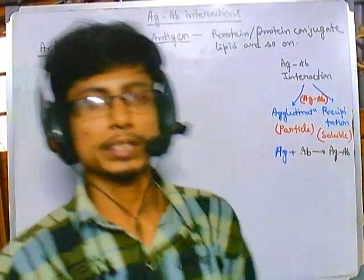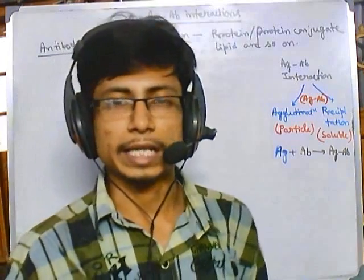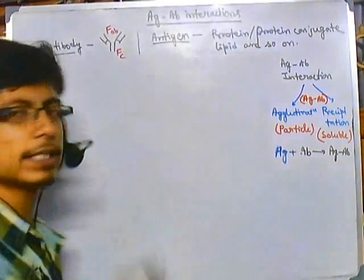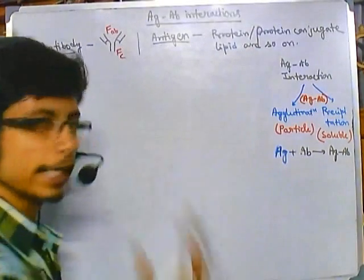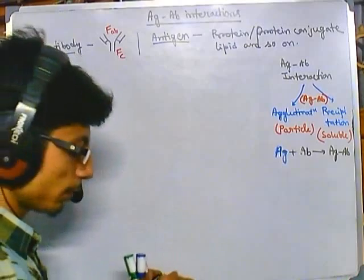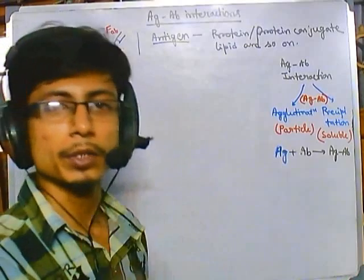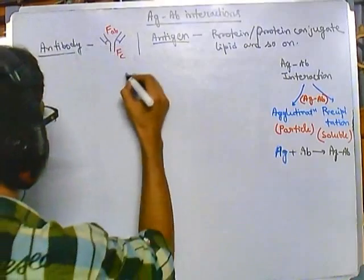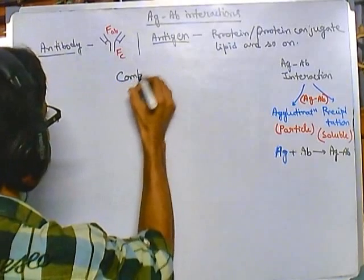Welcome back. We are talking about different antigen-antibody interactions, and this video will be about a very interesting technique to find out the antigen-antibody complexes that are present in our sample. It is called complement fixation.